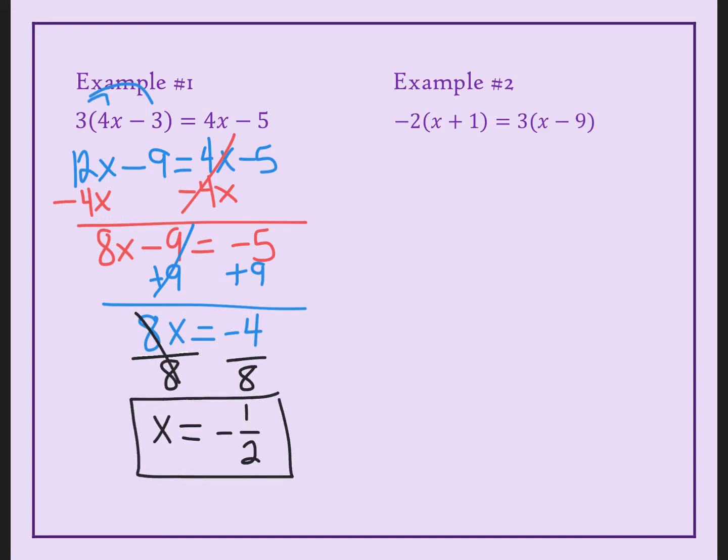Sometimes we get so excited when we see 8 and 4, and we start processing that it's some kind of 2. But because it's negative 4 over 8, it was negative 1 half.